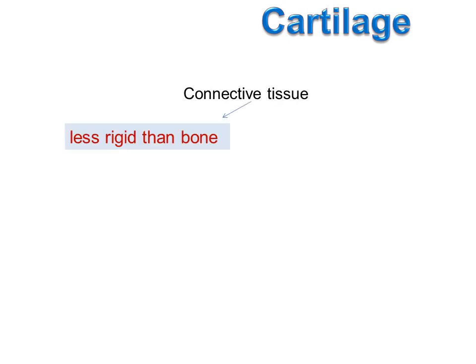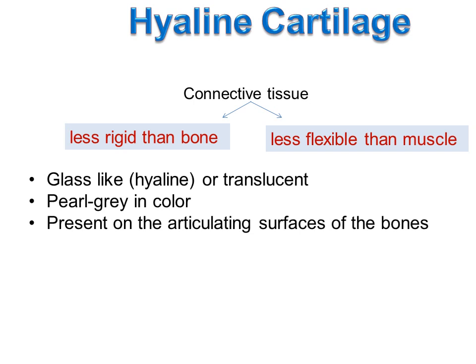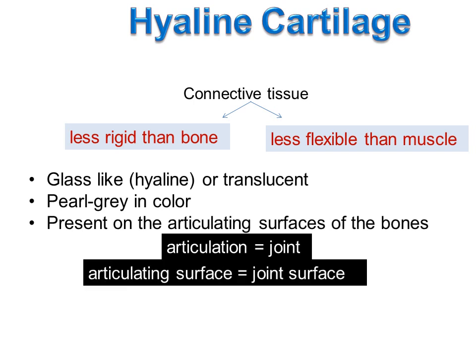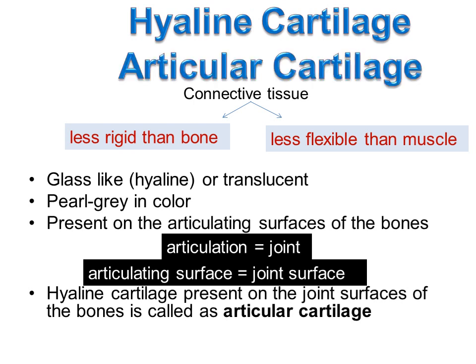Let's learn in detail about cartilage. Cartilage is a connective tissue that is less rigid than bone. Bones are rigid and less flexible than muscles, while muscles are flexible. Cartilage — specifically hyaline cartilage — is glass-like or translucent in appearance, hence the name hyaline, which refers to glass-like. Hyaline cartilage is pearl-grain in color. When hyaline cartilage is present on the articulating surfaces of the bones — articulation meaning joint — it is also called articular cartilage.